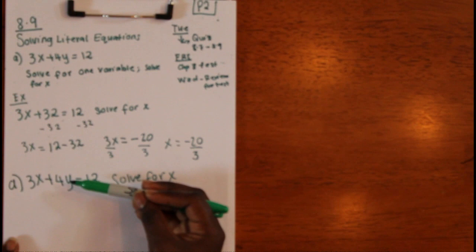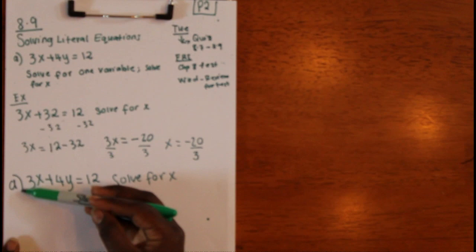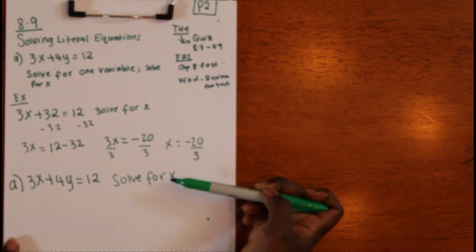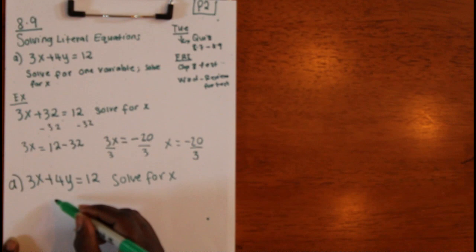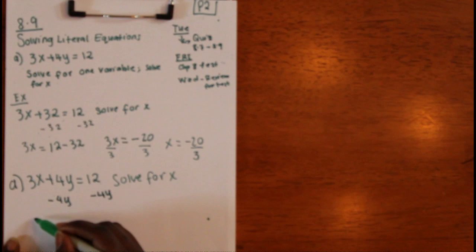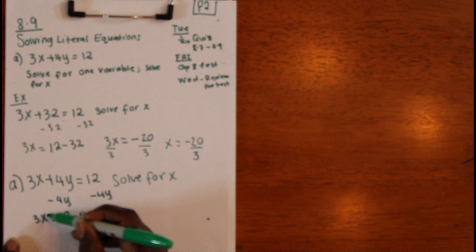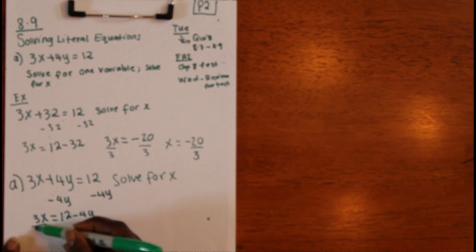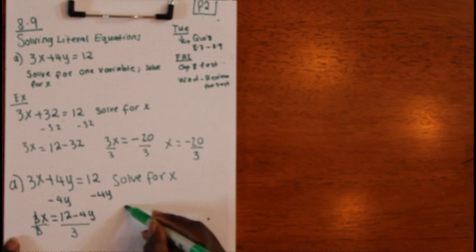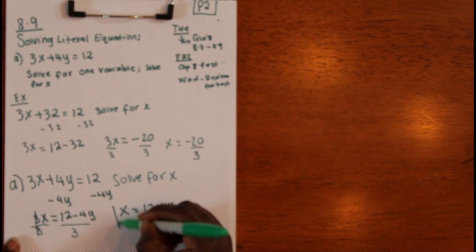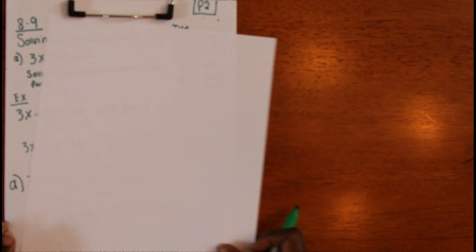To isolate X in 3x + 4y = 12, subtract 4y from both sides: 3x = 12 − 4y. Then divide both sides by 3, which cancels, leaving X = (12 − 4y) / 3. And there you have solved the equation for X.